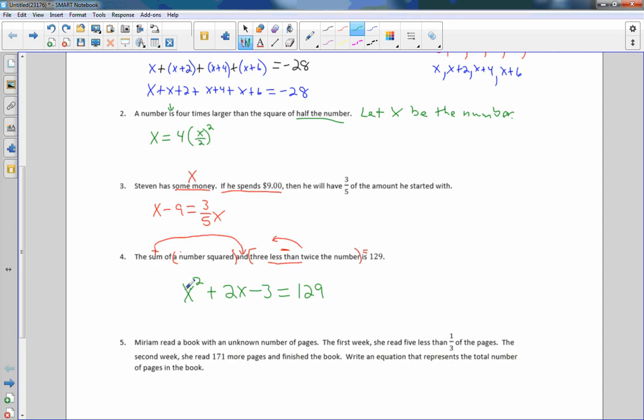So, there it is. X squared plus two x minus three equals one hundred and twenty-nine. The sum of a number squared and three less than twice that number is one hundred twenty-nine.